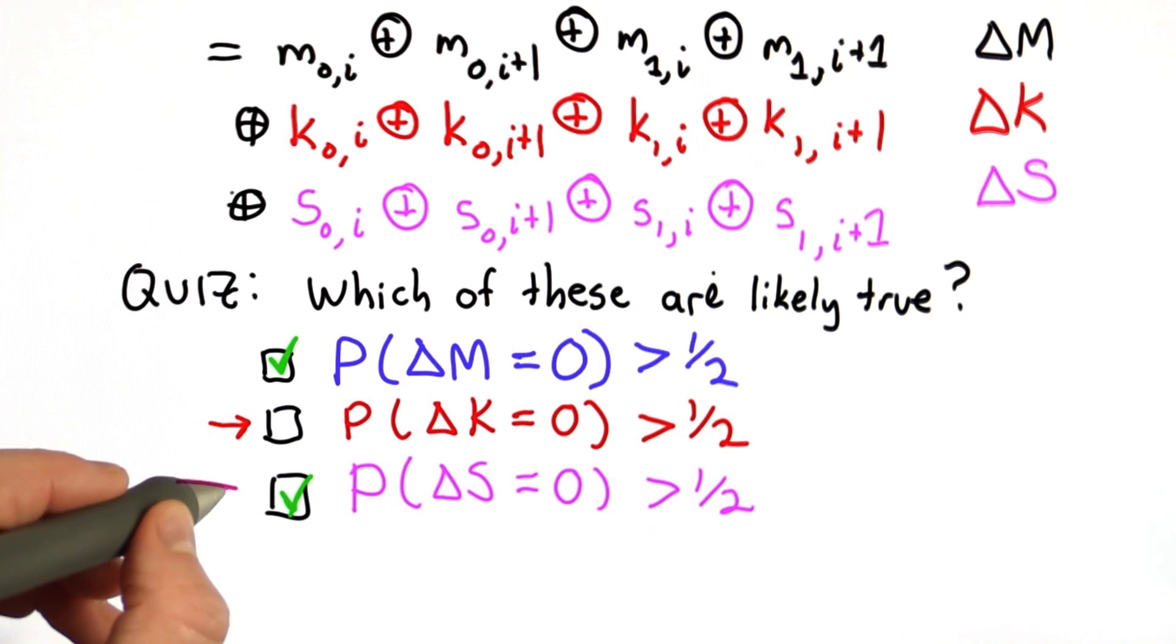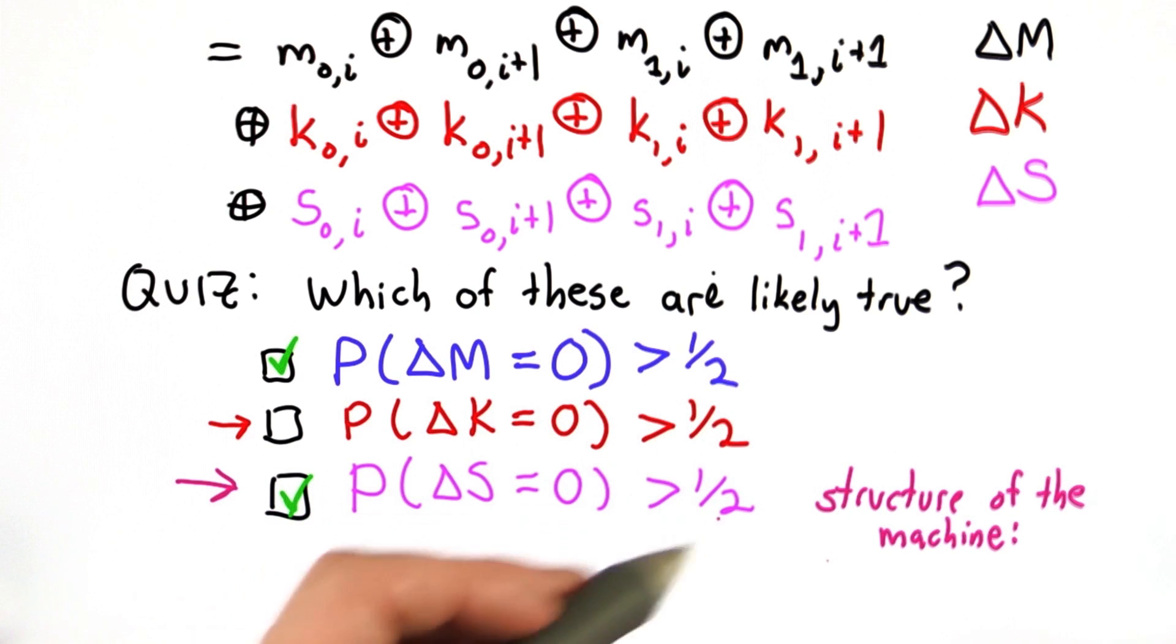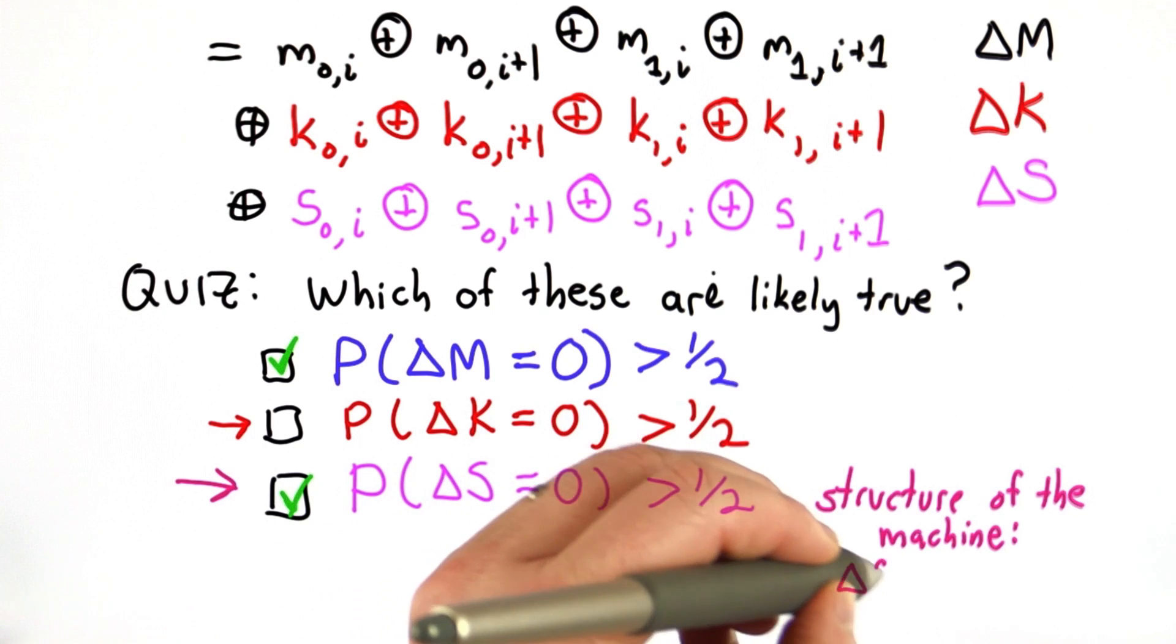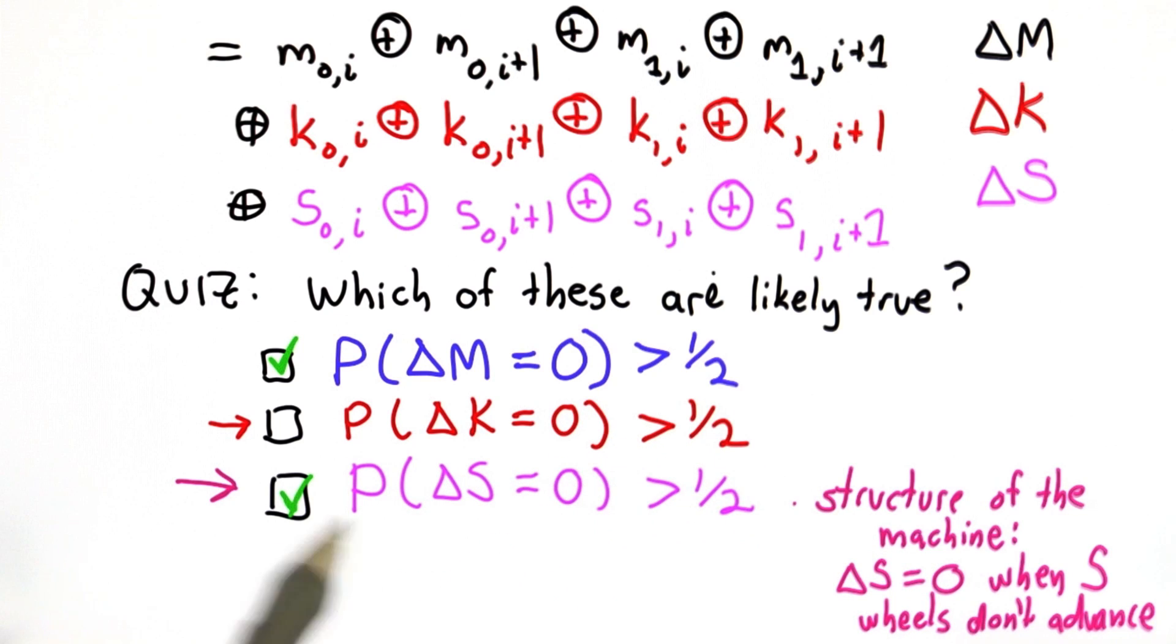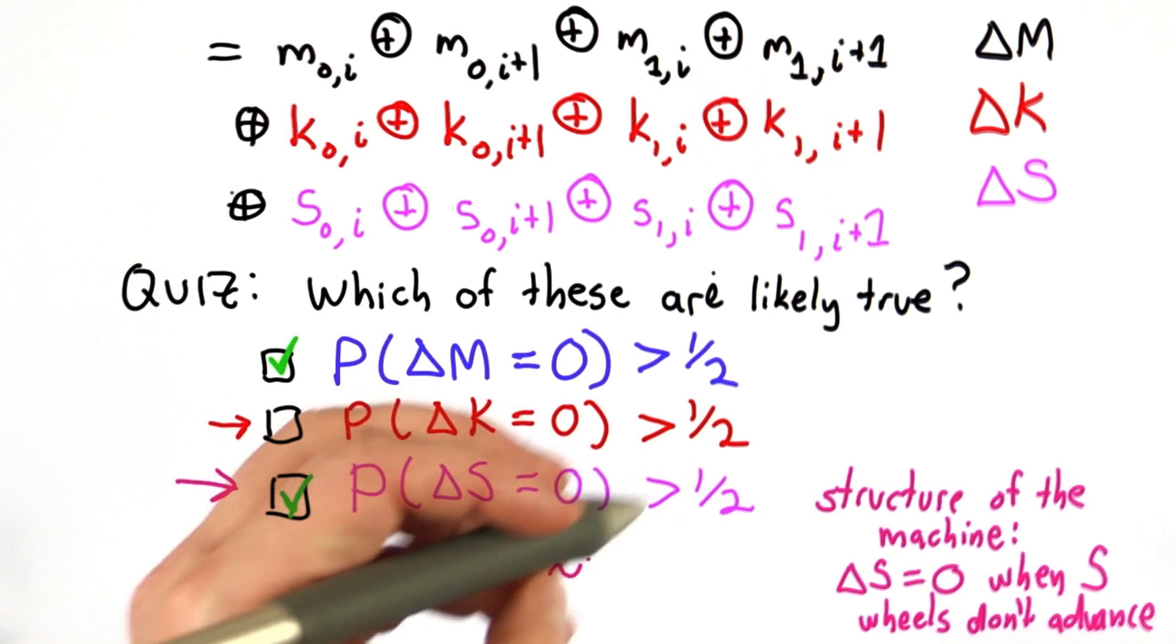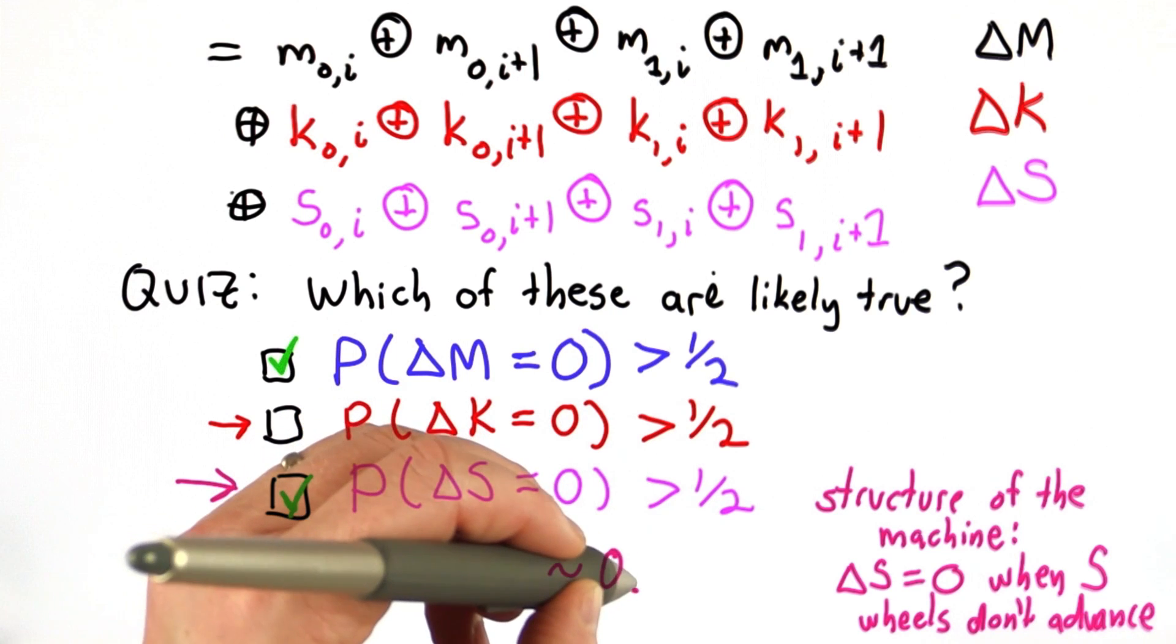For the third one, this follows from the structure of the machine. When the S wheels advance, this probability is about 1/2. But when they don't advance, delta S is always 0. So this means that the probability that delta S is 0 is significantly greater than 1/2. And it turns out for the structure of the Lorenz machine, it's about 0.73.